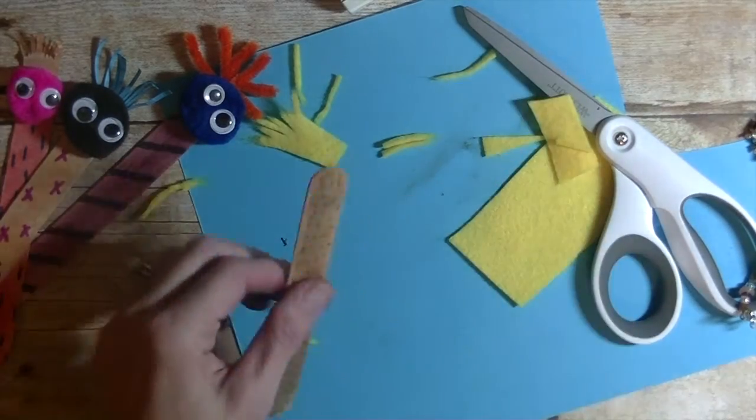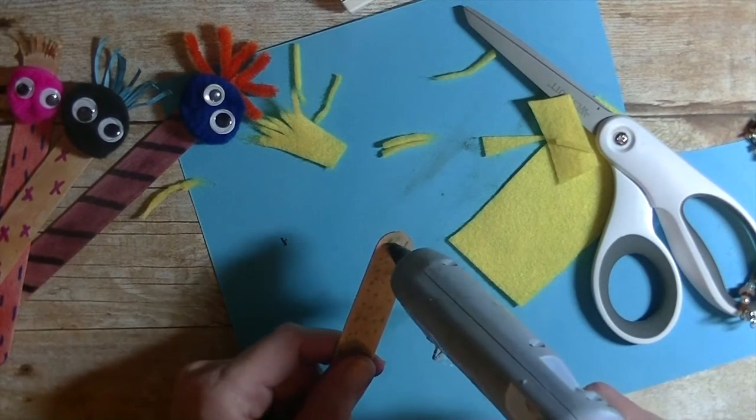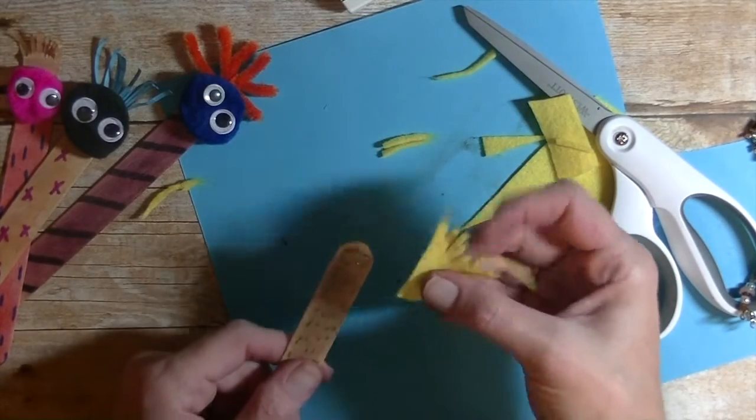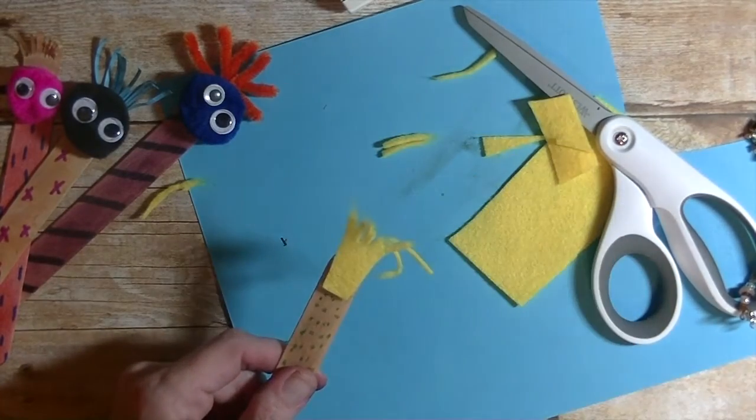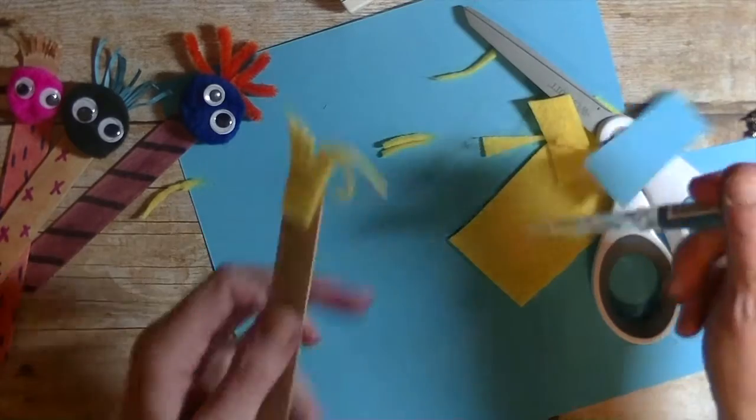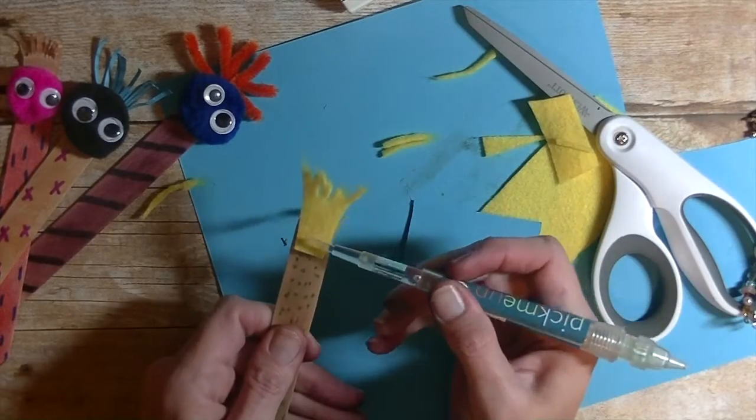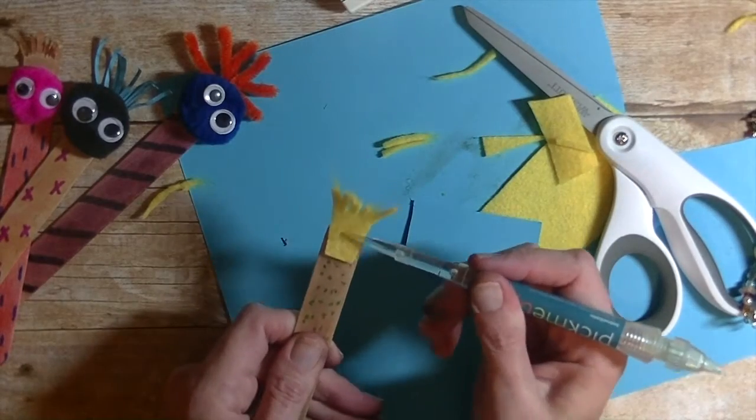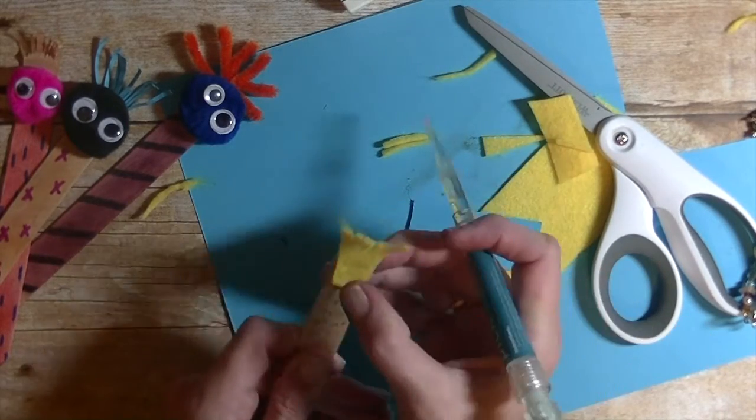Alright, I'm going to go ahead and take some glue. And again, I'm using a hot glue just so it's quicker for the video. And plop that on there. Just be careful if your little one is using hot glue. And push that glue in there. Get rid of those scragglies.